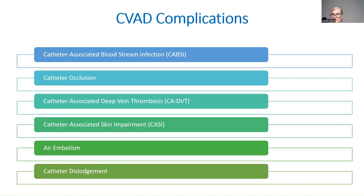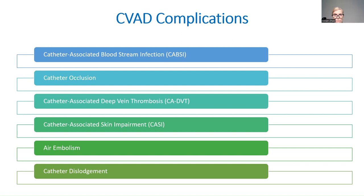The complications we're going to discuss today — we'll spend the most time on the first two because they're the most common. Those are catheter-associated bloodstream infection, or CAPC, and catheter occlusion. We'll also talk about catheter-associated deep vein thrombosis (CADVT), catheter-associated skin impairment (CASSIE), and briefly cover air embolism and catheter dislodgement.